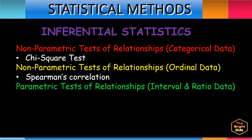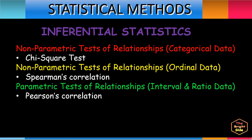For parametric tests of relationships for interval and ratio data, Pearson's correlation — also called Pearson's r — is a parametric test that evaluates the linear relationship between two variables. A relationship is linear when a change in one variable is associated with a proportional change in the other variable. Pearson's correlation measures the strength and direction of association between two variables on an interval or ratio scale. It attempts to draw a line of best fit through the data, and the Pearson correlation coefficient r indicates how far away all data points are from this line of best fit.